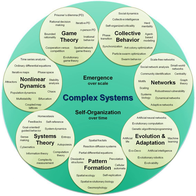The goal of systems theory is systematically discovering a system's dynamics, constraints, and conditions, and elucidating principles that can be discerned and applied to systems at every level of nesting and in every field for achieving optimized equifinality. General systems theory is about broadly applicable concepts and principles, as opposed to concepts and principles applicable to one domain of knowledge.